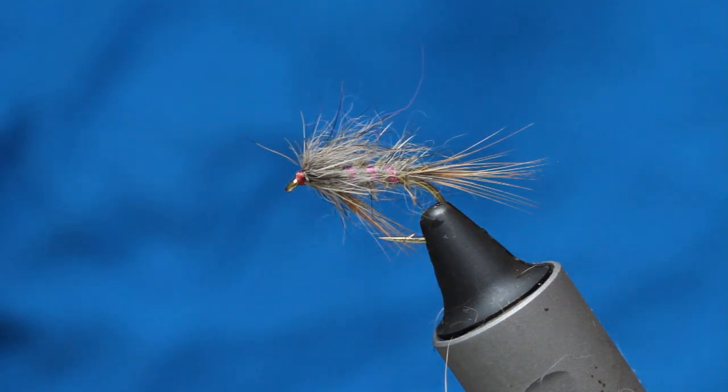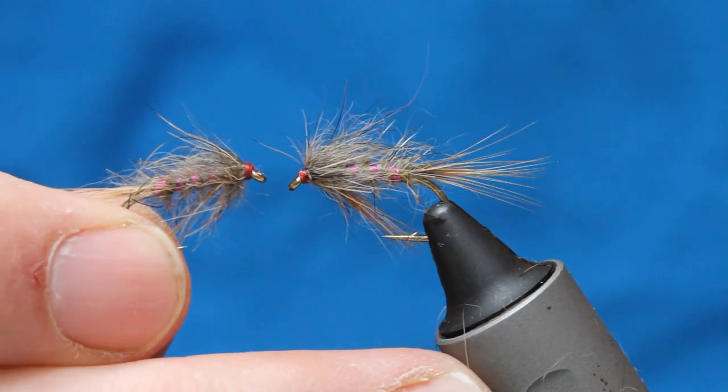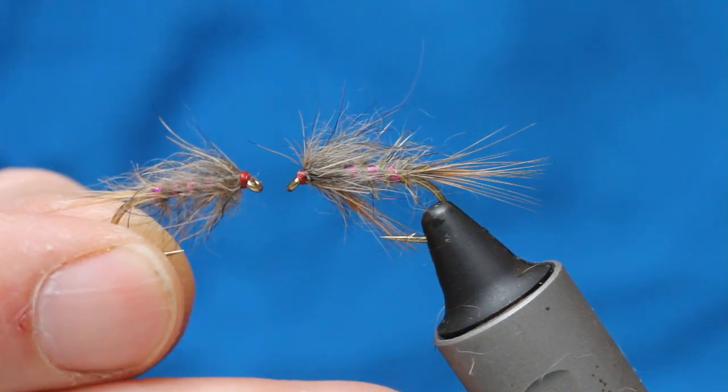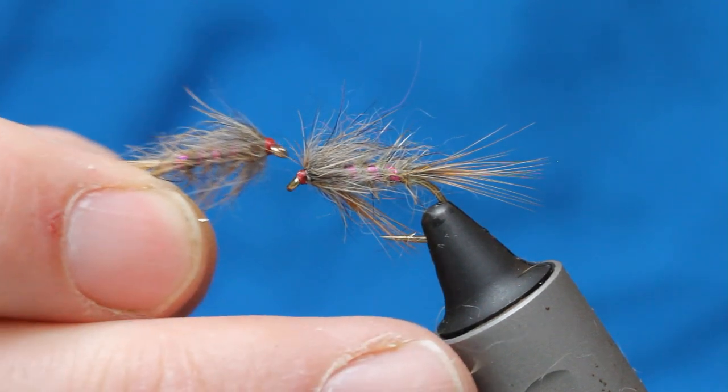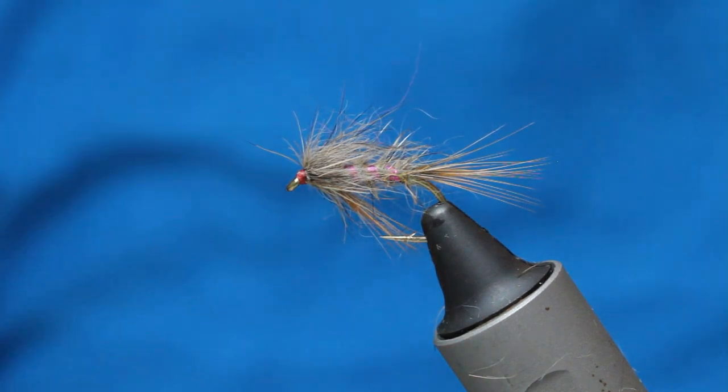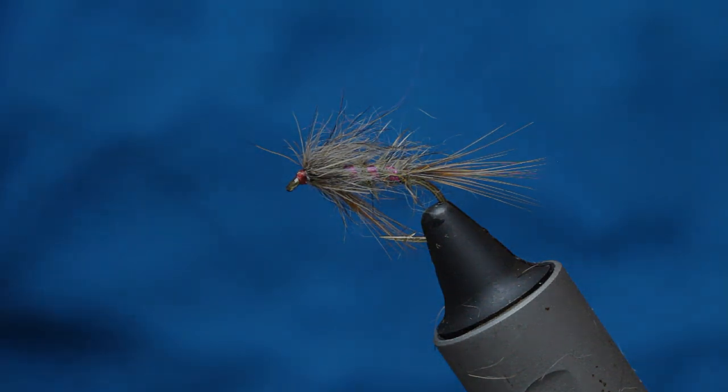Here he is. Little cranberry hare's ear. A fantastic fly. And one that doesn't have taken off, a lot of skill to tie. Nice and easy. And very, very effective. I really hope you enjoyed that. Please subscribe to my channel. More fly tying videos and fishing videos. Thanks for watching. And take care.